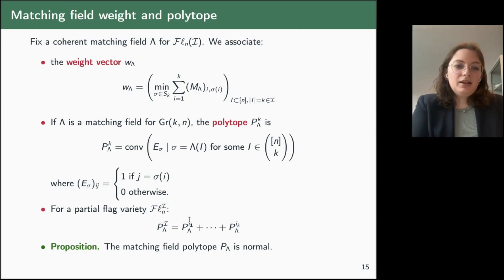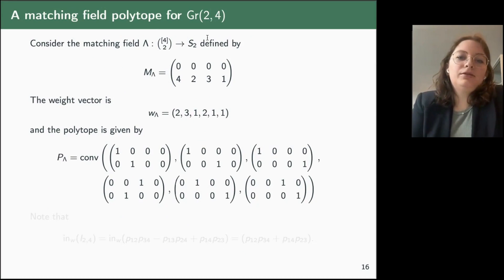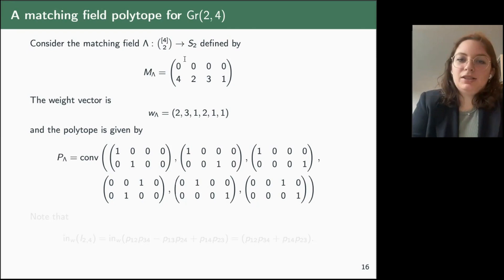For example, consider a matching field on Gr(2,4) defined by a matrix. The one thing we have to check is that the minimum in each minor is obtained just once — which is easy to see since all coordinates in the second row are distinct. We then get a weight vector labeled by the subsets {1,2}, {1,3}, {1,4}, {2,3}, {2,4}, {3,4}.